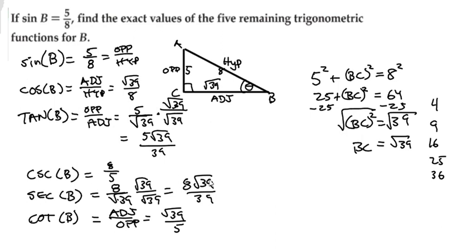And all of these, 8 fifths, 8 times square root of 39 over 39, and the square root of 39 divided by 5 are all going to give you answers that are greater than 1. These will all be less than 1, these will all be greater than 1. And so it kind of fits into our mode of what we're trying to do here.